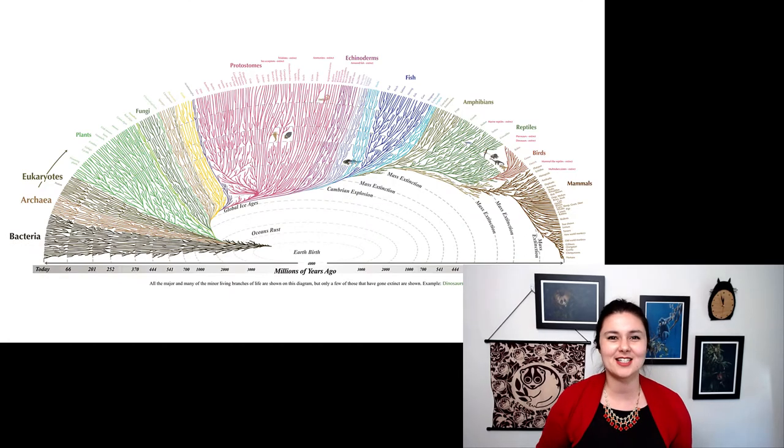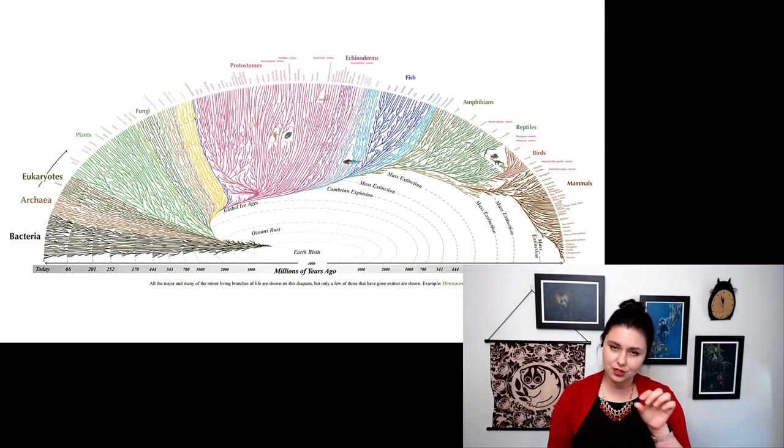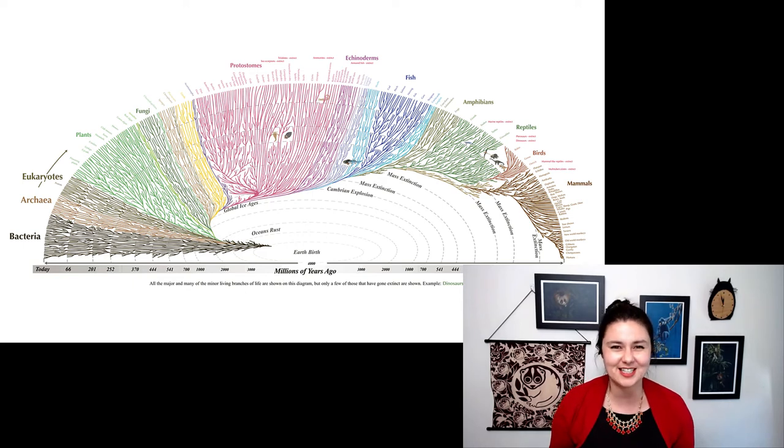There are many different representations of the evolutionary history. This one is particularly fun, because you can see that it radiates out and shows time. So you can see that some branches are very old, but many branches are much newer. Only a few branches go all the way to the center. And as we get farther out, we have more and more branches, showing that there are more different lineages of living organisms alive the closer we get to today. There is a lot of information on this tree here, but you can see that bacteria are the oldest. Next is archaea and eukaryotes. And mammals are all the way at the other end. We're relatively recent when we're talking about all life.